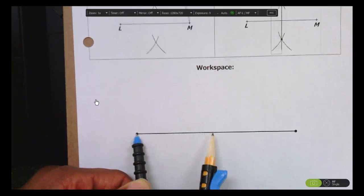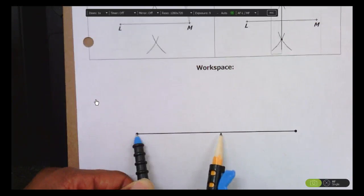You need to open your compass more than halfway. It has to go past the midpoint of the segment. It doesn't have to be exactly anywhere, but it needs to be more than halfway.